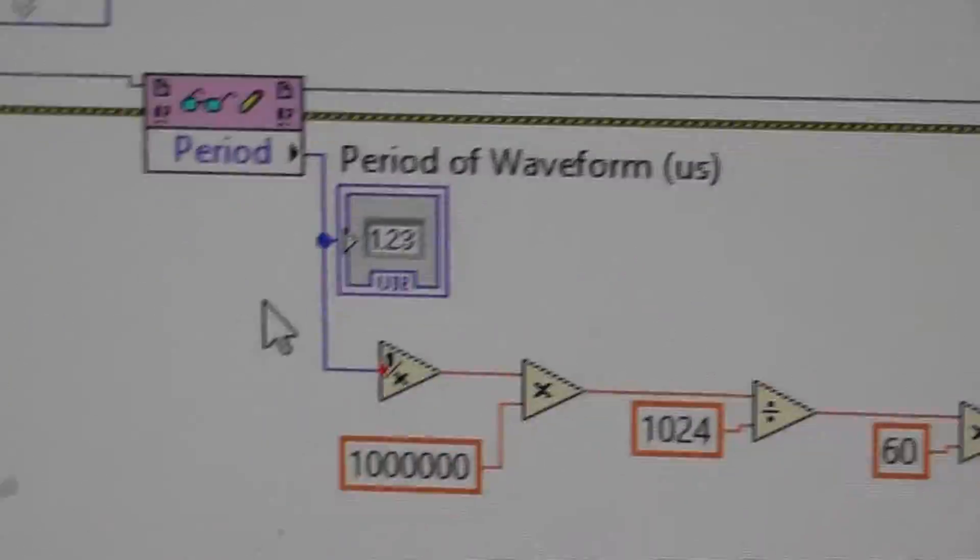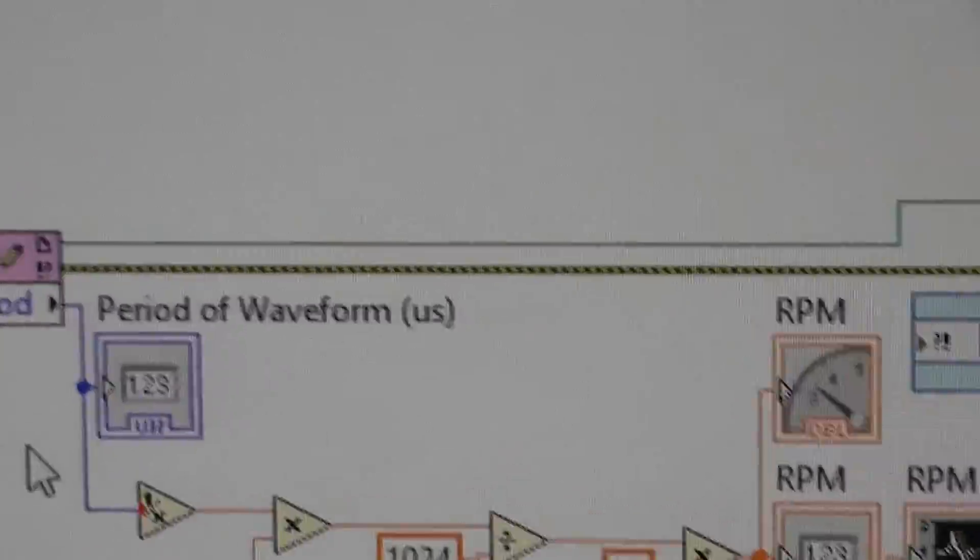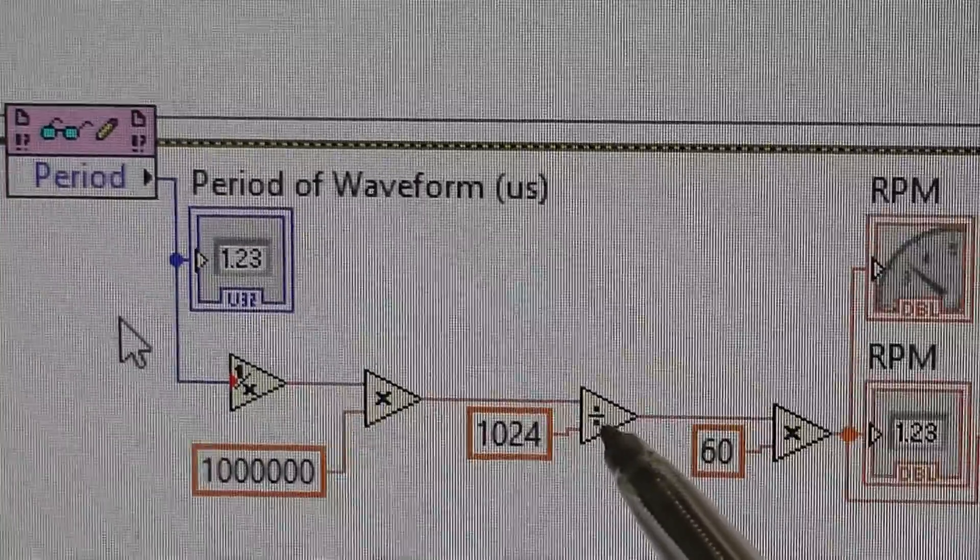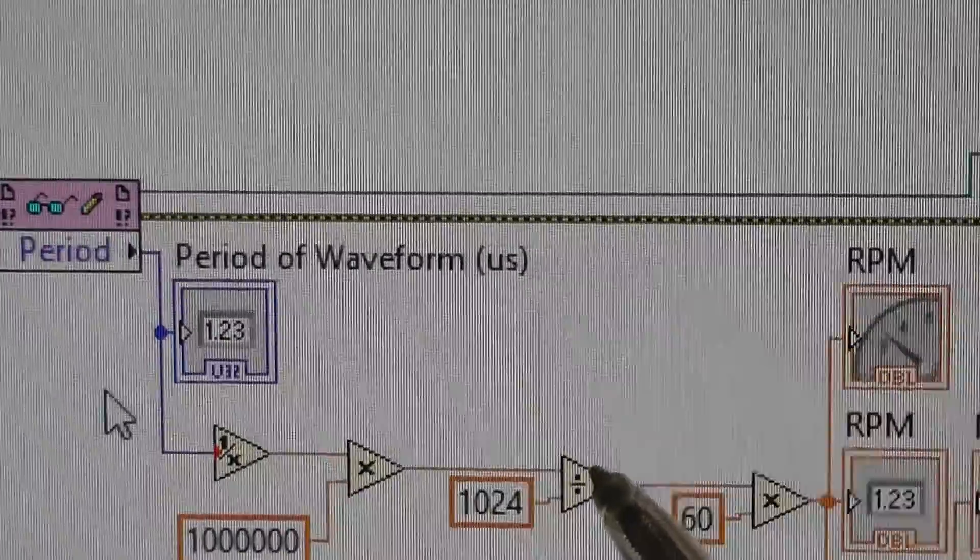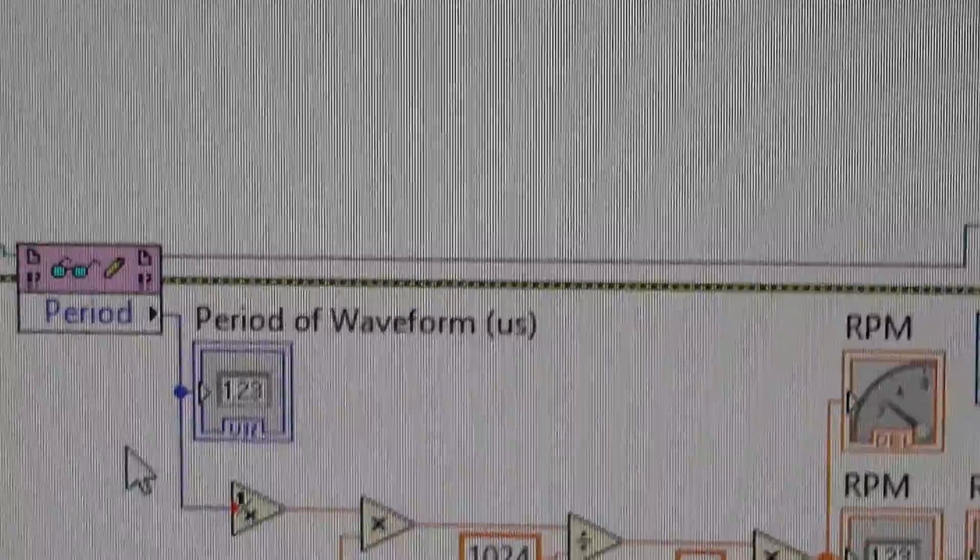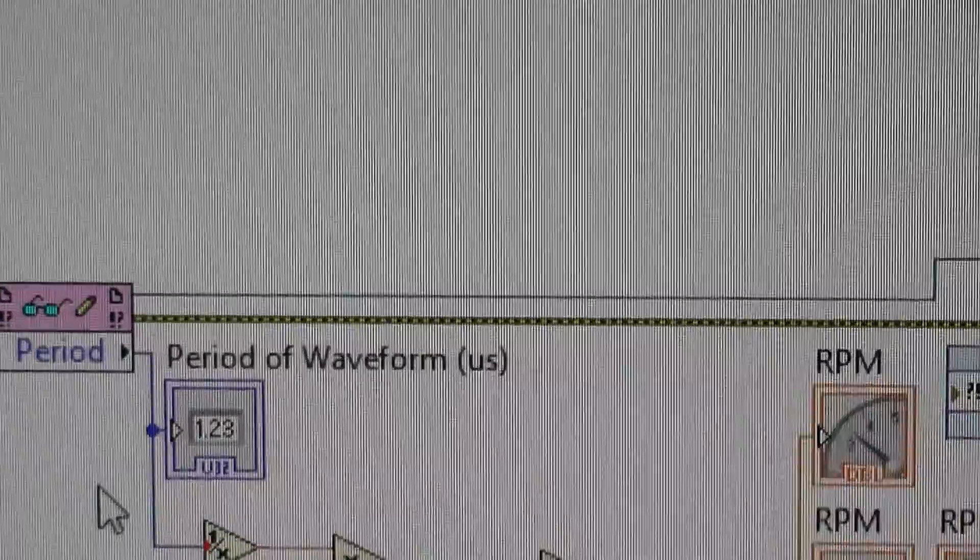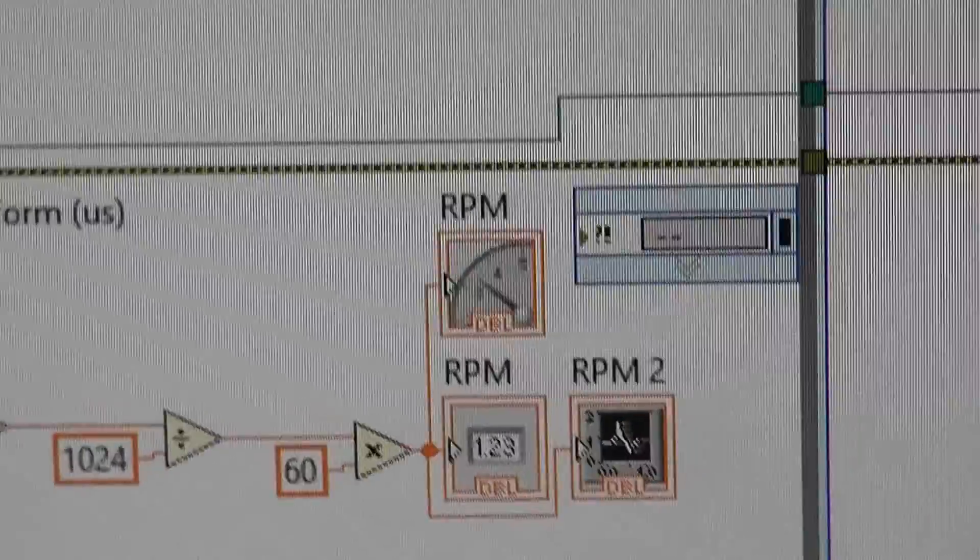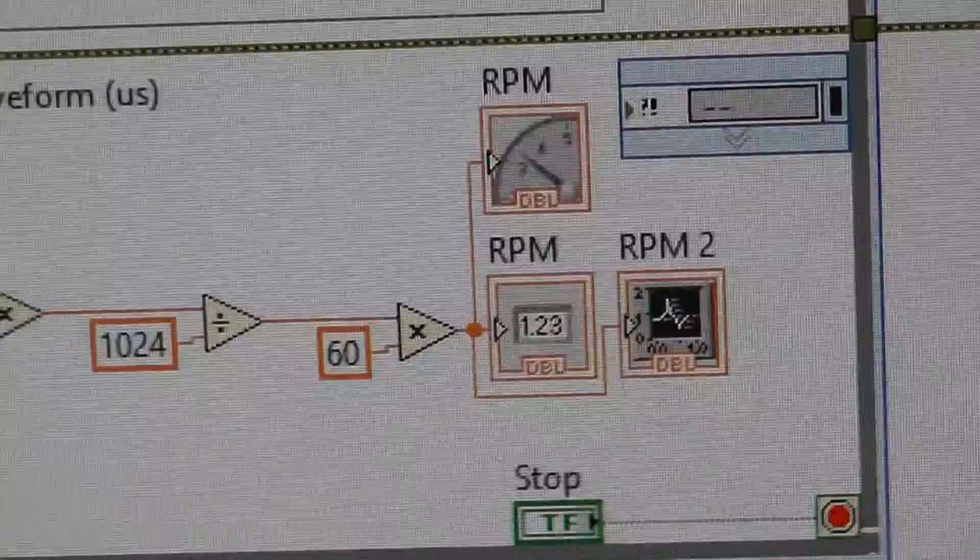So just to recap on that, I've got the frequency in hertz, which is here. And then divide by 1024, which gives me revolutions per second, because it's 1024 pulses per revolution. And then I multiply by 60 to get RPM, which is really what we're after.